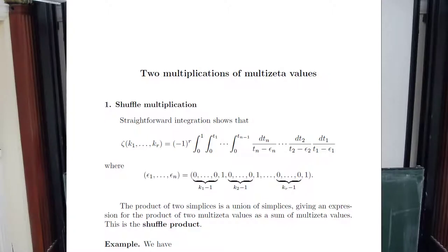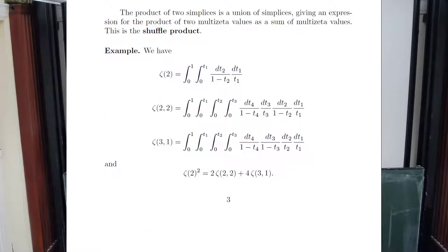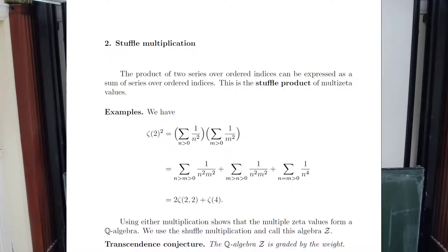If you multiply two of these integrals, it's a product of two simplices. You can decompose it using the same kind of formula for a product of two simplices—you cut it all up into simplices. Here's a specific example: if you multiply zeta(2) times itself, you write the product of simplices as sums, and you get these terms. You get an identity for the product of zeta(2) times zeta(2), written as a sum. This already proves that the multiple zeta values form a Q-algebra.